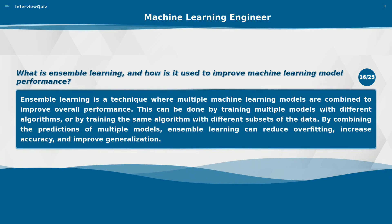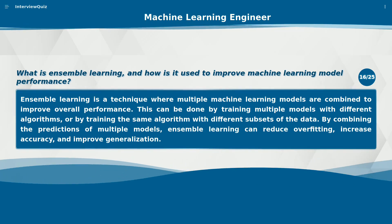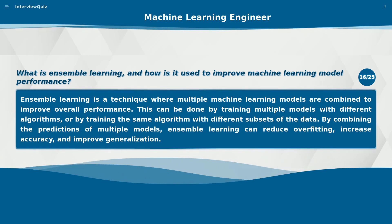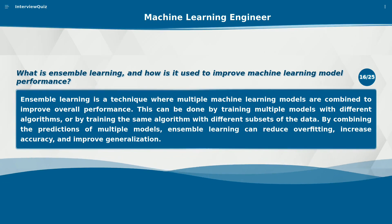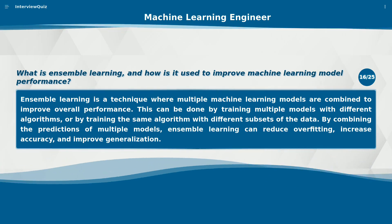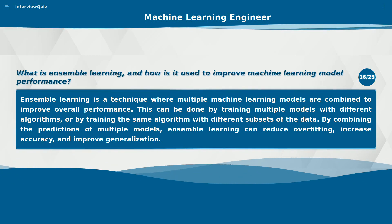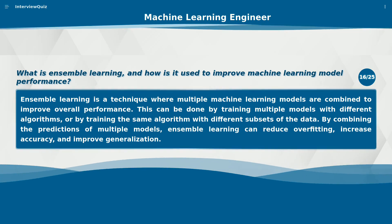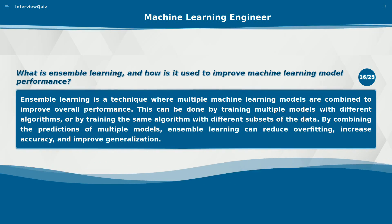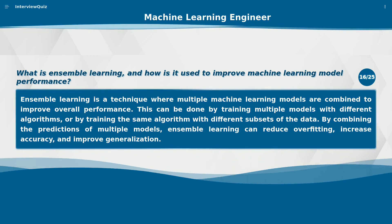What is ensemble learning, and how is it used to improve machine learning model performance? Ensemble learning is a technique where multiple machine learning models are combined to improve overall performance. This can be done by training multiple models with different algorithms, or by training the same algorithm with different subsets of the data. By combining the predictions of multiple models, ensemble learning can reduce overfitting, increase accuracy, and improve generalization.